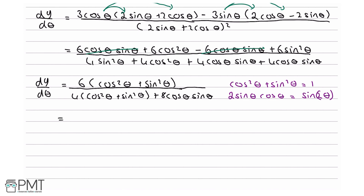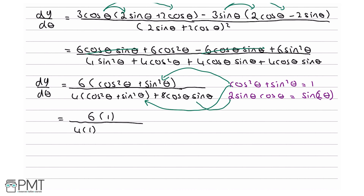Applying these identities: 6 times (cosine squared theta plus sine squared theta) becomes 6 times 1, which is 6. In the denominator, 4 times (cosine squared theta plus sine squared theta) becomes 4. And 8 cosine theta sine theta is the same as 4 times 2 sine theta cosine theta, which equals 4 sine 2 theta.